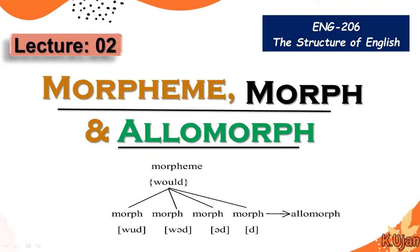Welcome everyone. Today we are going to make distinctions between morpheme, morph, and the term allomorph. This topic is from the subject English Code 206, the structure of English. This is our lecture number two.